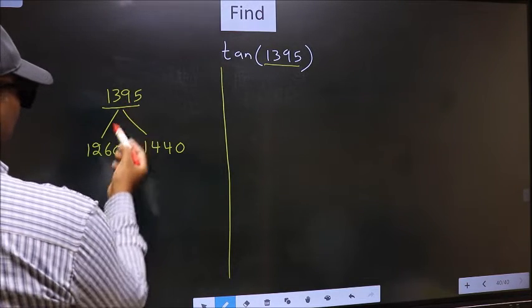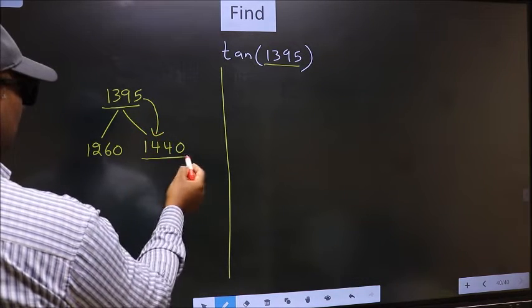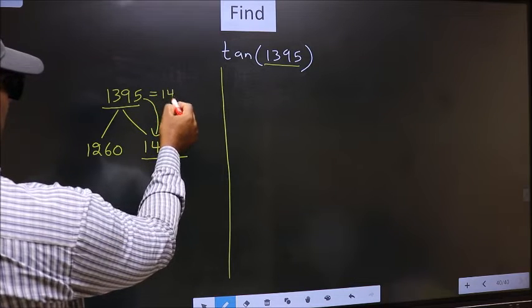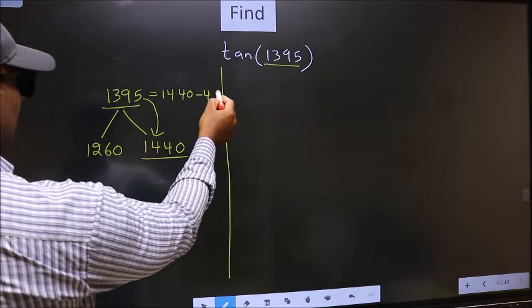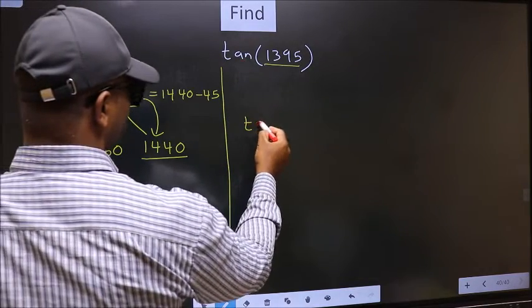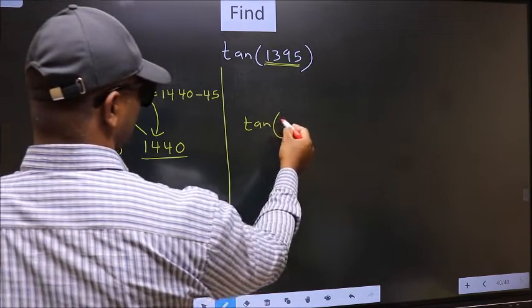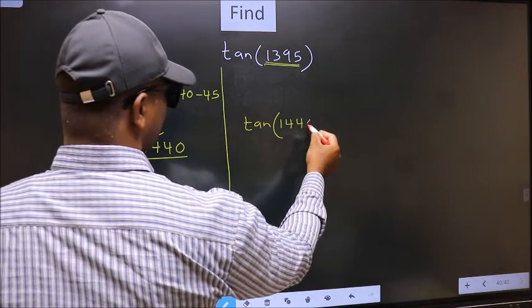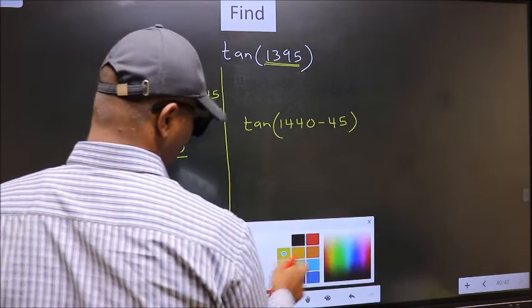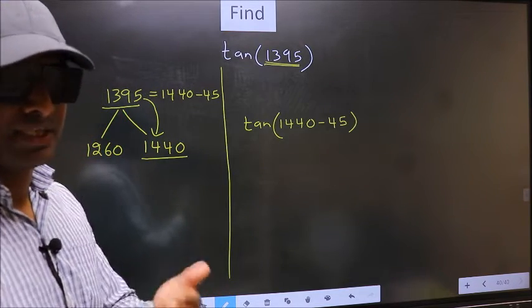Next, 1395 is close to which number? This is close to 1440. So in place of this, now we should write 1440 minus 45. So this will become tan. In place of this, we write 1440 minus 45. This is your step 1.